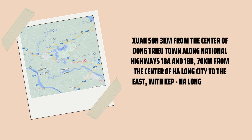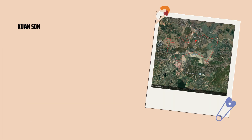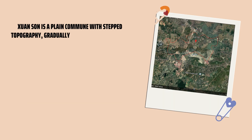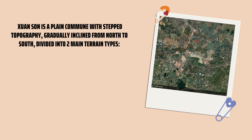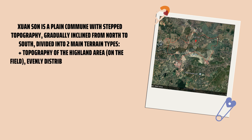In winter, the lowest average temperature is 14.5 to 15 degrees Celsius, from November to March of the next year. The average annual rainfall is about 1,700 mm per year, with the highest recorded at about 2,820 mm and the lowest at about 780 mm, unevenly distributed throughout the year and divided into two seasons.